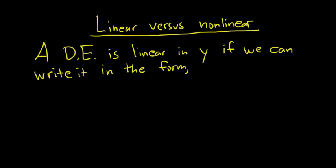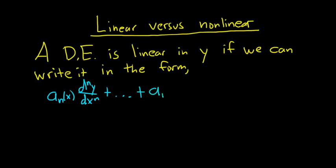You have a coefficient a_n(x) — a pure function of x — times the nth derivative, plus all the way down to the first derivative: a_1(x) times dy/dx, again a pure function of x, and then plus a_0(x) times y — the zeroth derivative is just the original function — and that equals g(x).